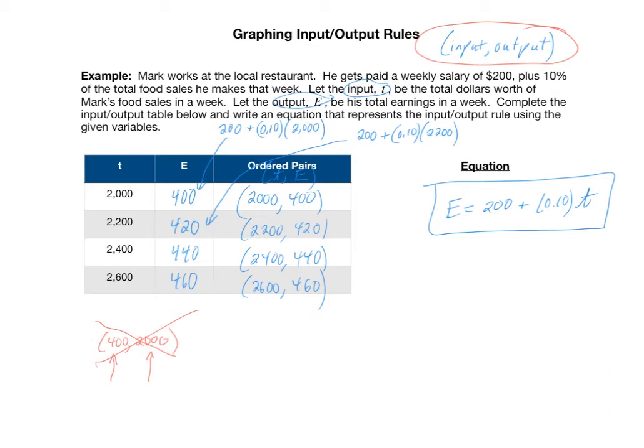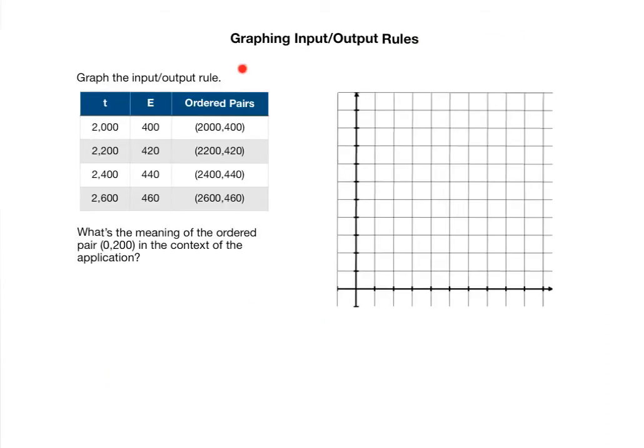We now have the input-output relationship represented numerically in table form and symbolically in equation form. Let's now take a look at it graphically. Here again is the table we just created on the previous screen. Let's now look at the rule graphically. Notice here that we have just quadrant 1, and the reason we're only using quadrant 1 is because the inputs are strictly positive and the outputs are also strictly positive.